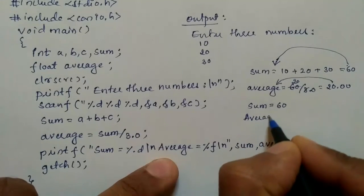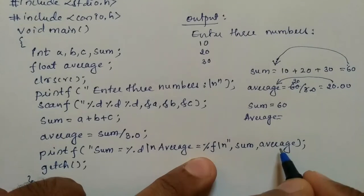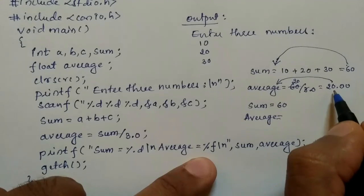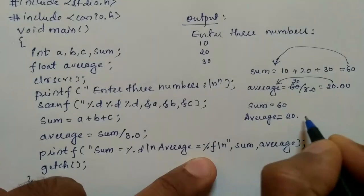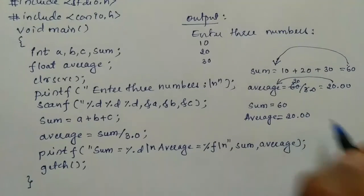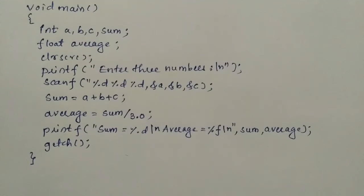And it is going to print average = %f is a format specifier that refers to this variable that holds the value 20.0, so it is equated to the variable average, that is 20.00. And now we are going to execute this particular program. For that I will take you to my laptop screen.